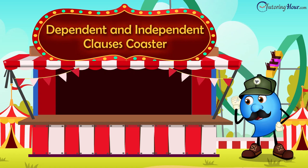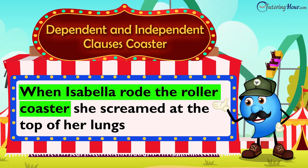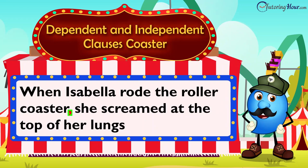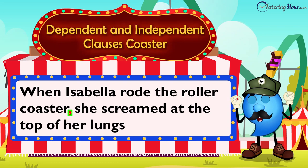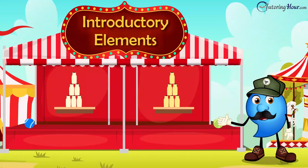Now, folks, we're entering the dependent and independent clauses coaster tent. Strap in! Our sentence strip is here. Can you identify the dependent clause? When Isabella rode the roller coaster is the dependent clause here. The second part, she screamed at the top of her lungs, is the independent clause. We need to separate the clauses using a comma, making our sentences clear and smooth. The sentence will look like this: When Isabella rode the roller coaster, she screamed at the top of her lungs.